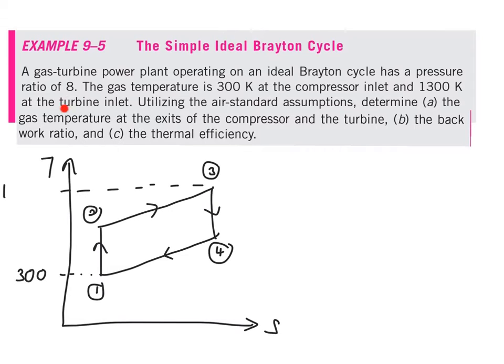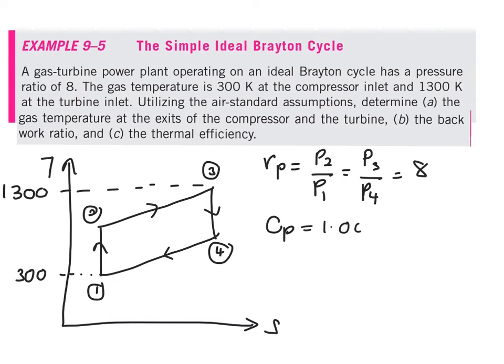...the inlet temperature at your turbine is 1300 Kelvin. You are also given the pressure ratio, which is P maximum over P minimum. In this case, it is P2 over P1 or P3 over P4, and it equals 8. Because this is an air standard assumption, you will have CP value equal to 1.005 kilojoules per kg·K, and your gamma value will be 1.4.